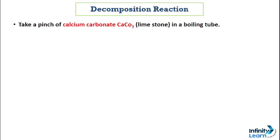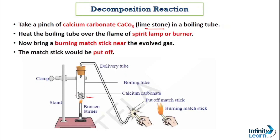Our first topic is decomposition reactions. We have taken a pinch of calcium carbonate, also known as limestone, and it is being heated in a boiling tube by a burner — you can also use a spirit lamp. After burning the calcium carbonate, a gas is delivered through a delivery tube. We get a white colored gas coming through this delivery tube, and if you bring a burning magnesium ribbon near the mouth of the delivery tube, it will be put out.